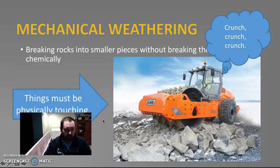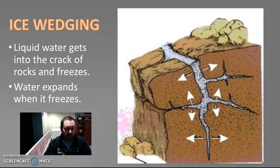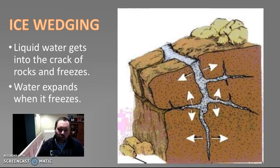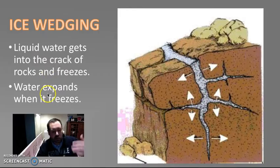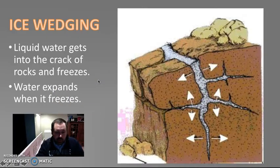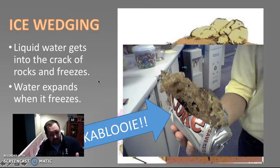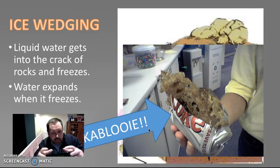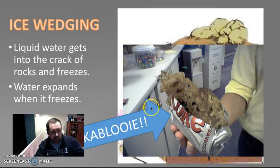Don't worry if you're a fan of chemical weathering — we'll be talking about that later too. One kind of mechanical weathering is ice wedging. Take a look at these cracks in the rock here. Let's just suppose that we have water getting into the cracks of the rock, and whenever the water freezes, it expands. Liquid water gets into the cracks of rocks and freezes, and the water expands when it freezes. When it expands, it pushes the parts of the rock further apart. Have you ever put a can of Coke inside the freezer too long? Kablooey — it just explodes, because the liquid inside expands whenever it gets frozen. It's the same thing that happens inside a rock.